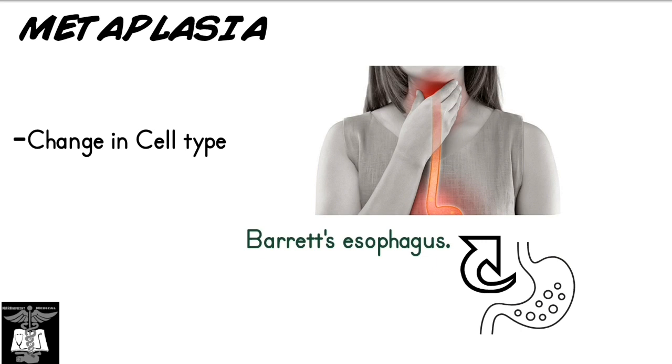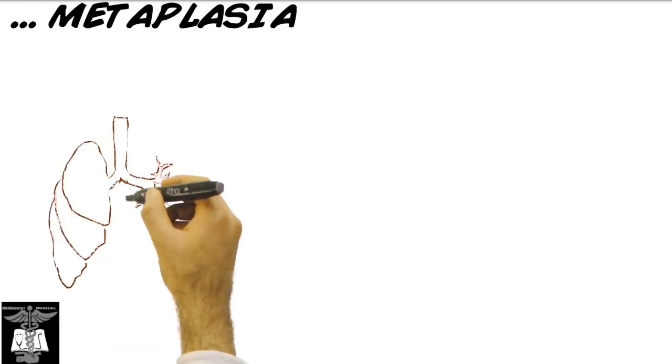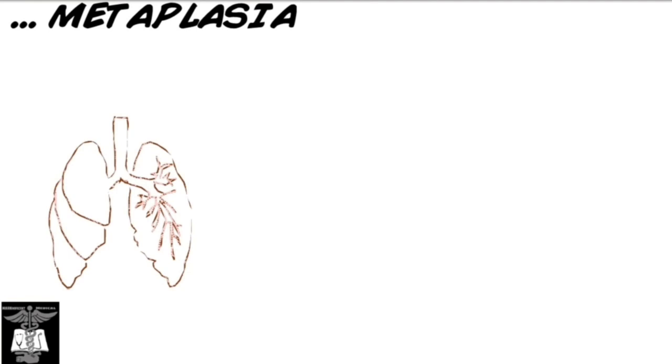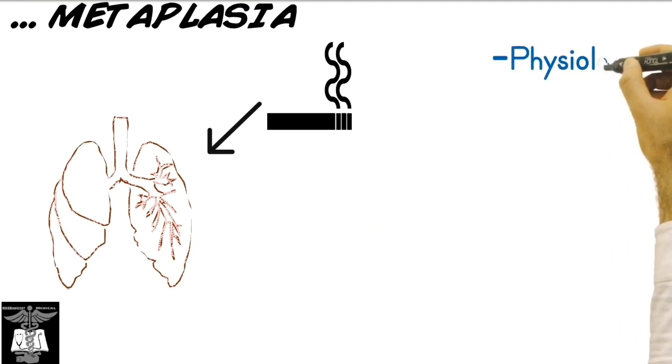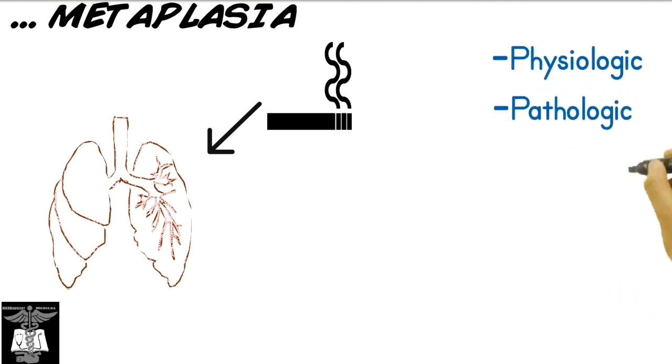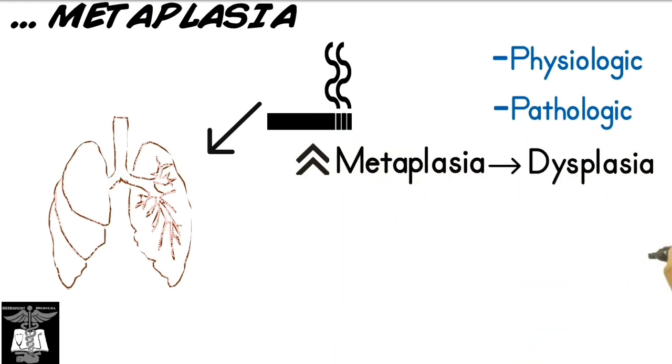Another example would be the replacement of pseudostratified columnar cells in the respiratory system with squamous epithelium as a result of frequent cigarette smoking. Metaplasia can be physiologic or pathologic, but is not cancerous on its own. However, prolonged metaplasia can turn into dysplasia, which is a precursor to cancer.